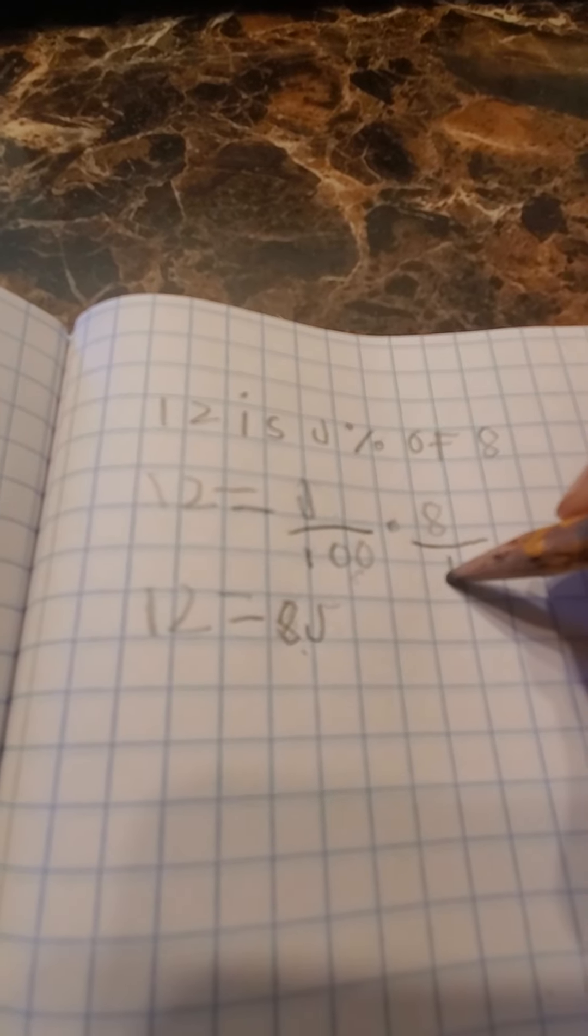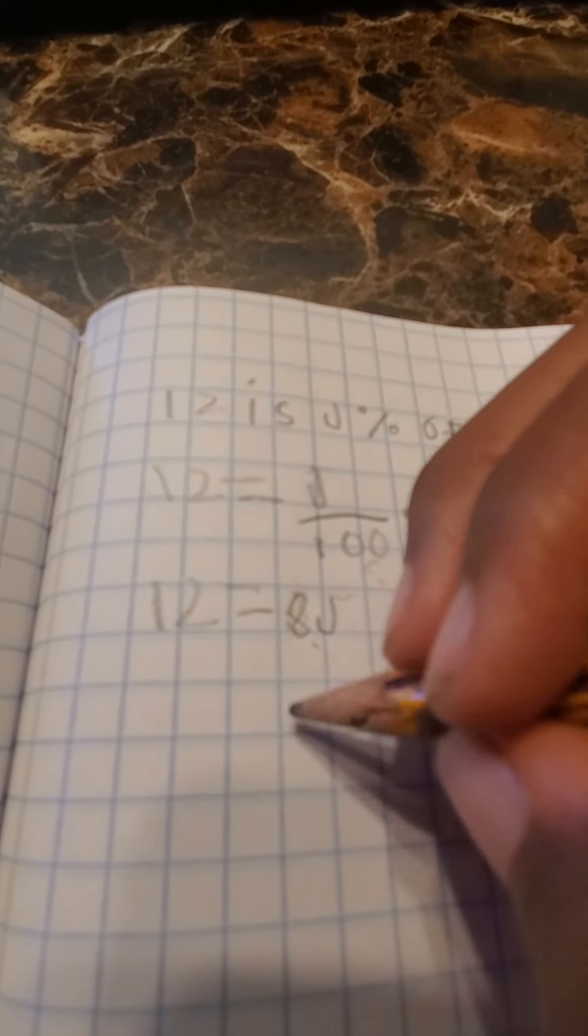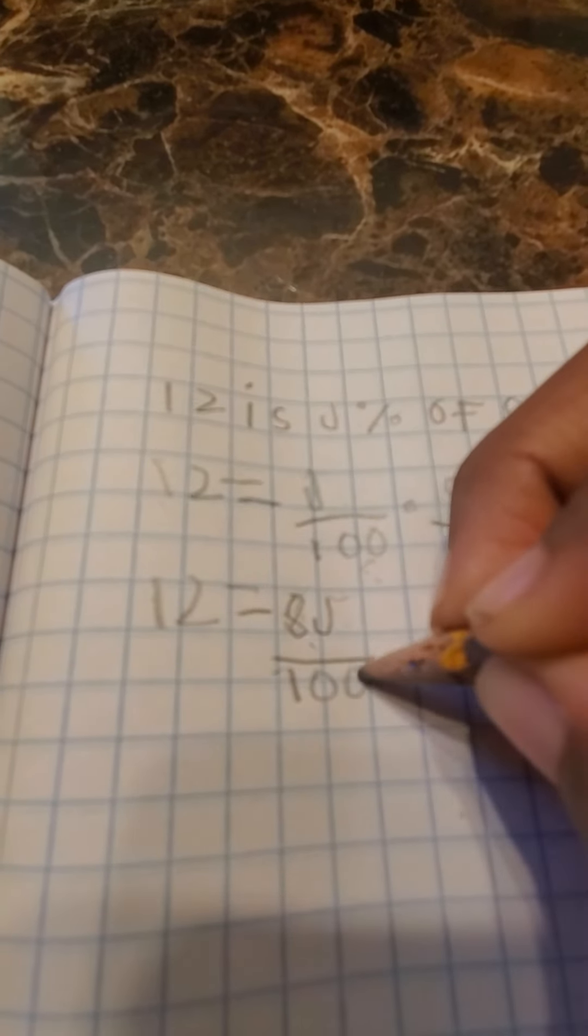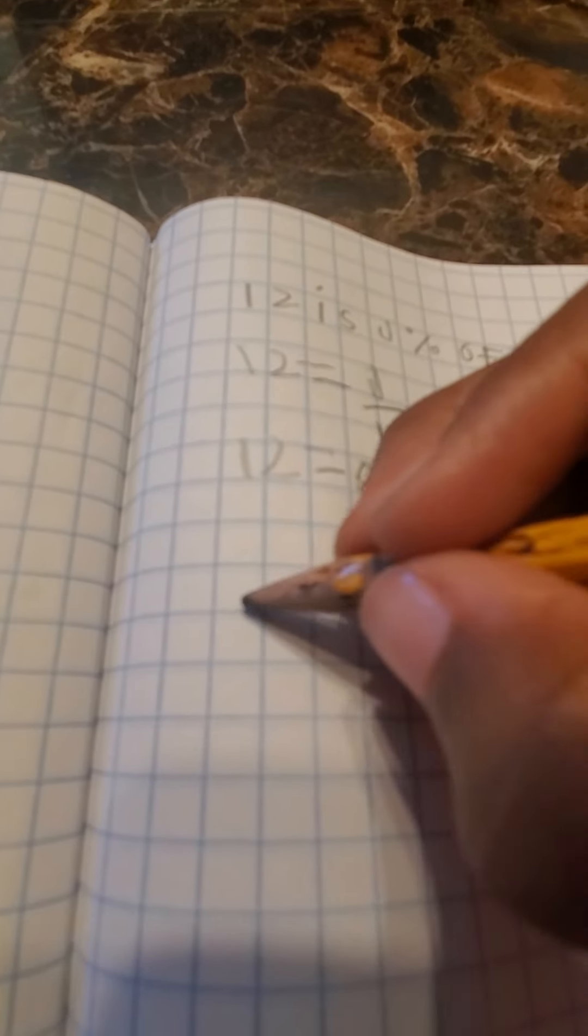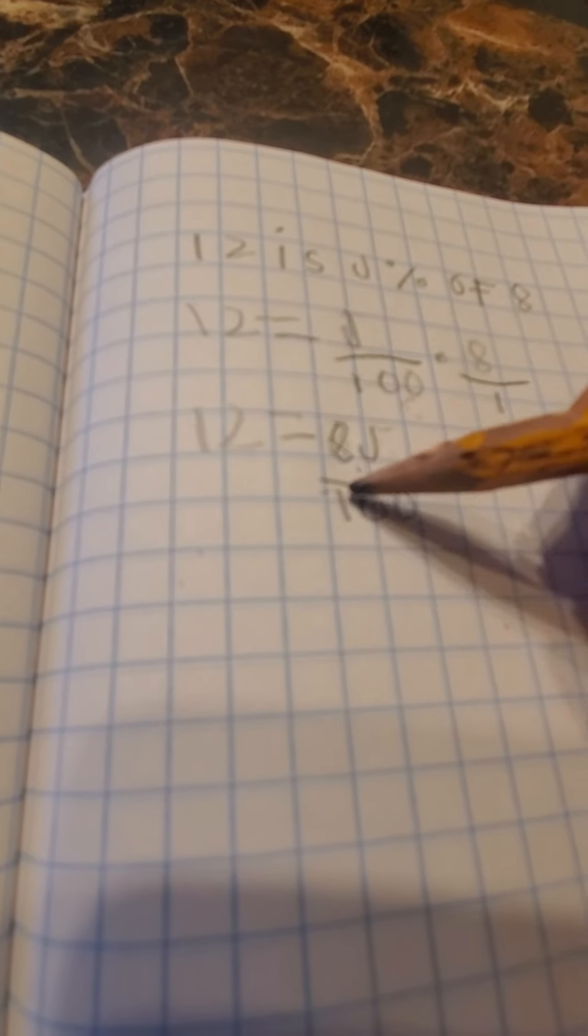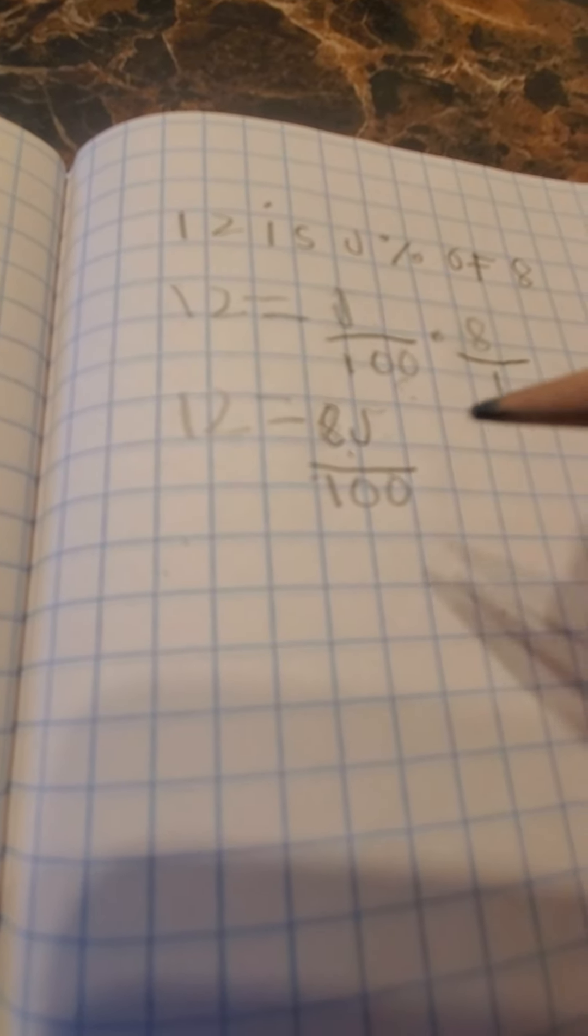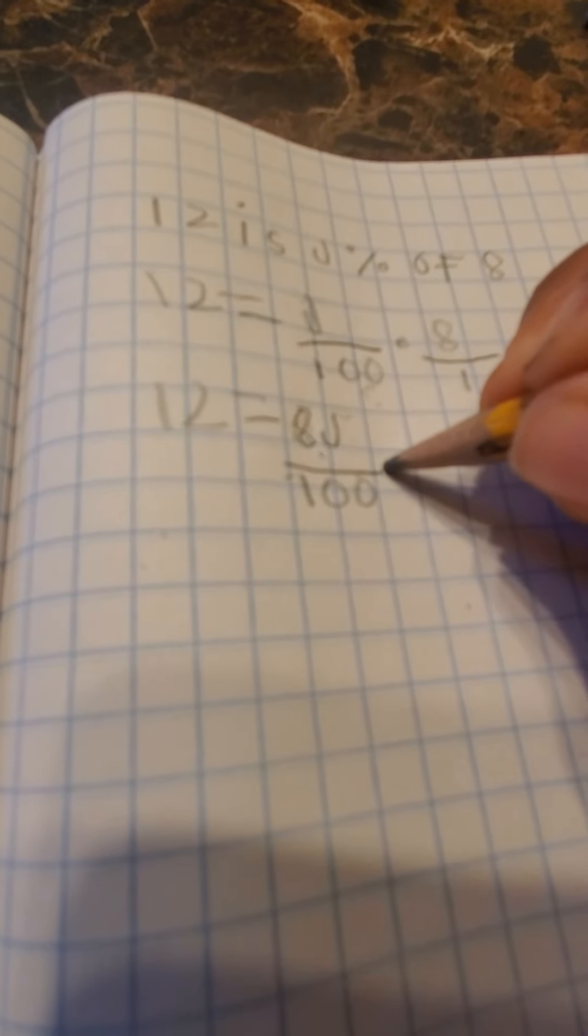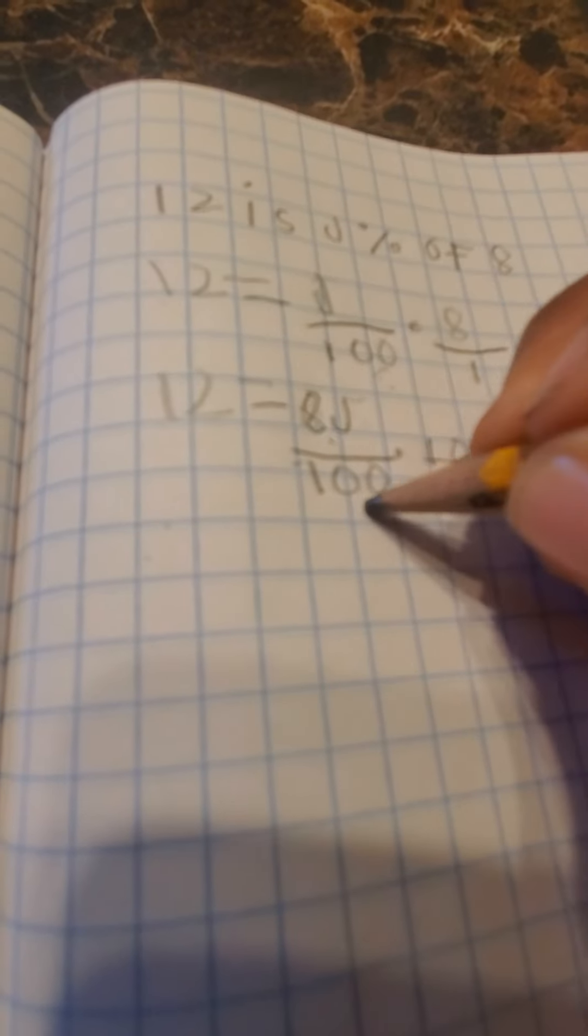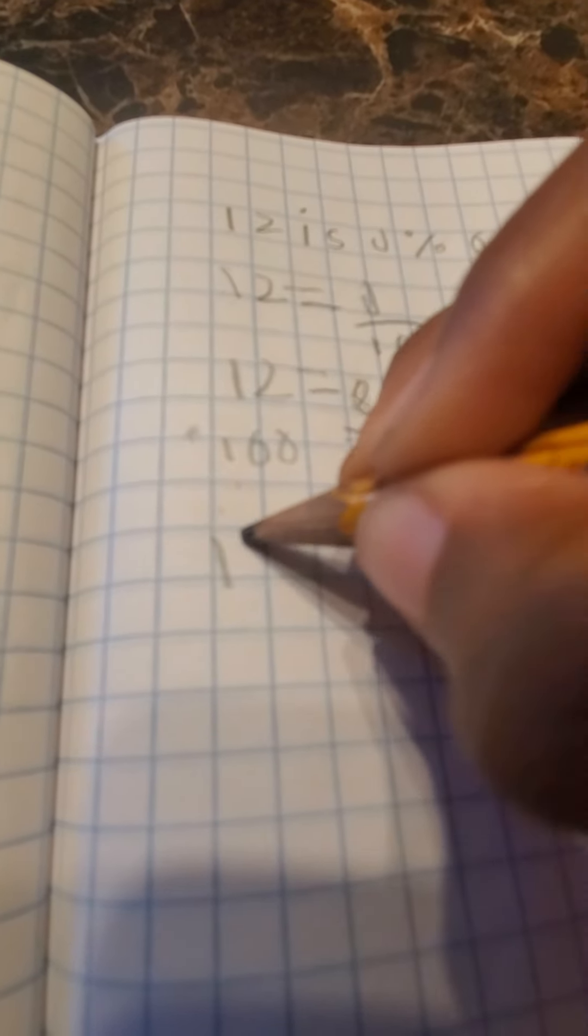100 times 1 is still 100, so 8J over 100. Now me personally, you can do the fraction, but I do not like fractions. So what I'm going to do is multiply both sides by 100. So these two 100s cancel, times 100, so 1200 equals 8J.